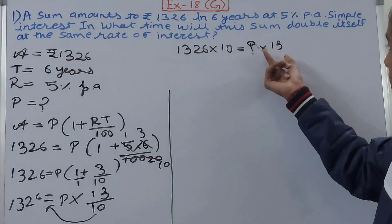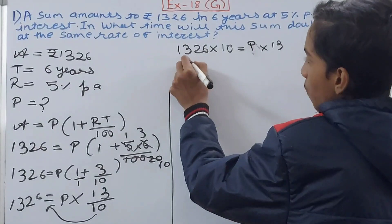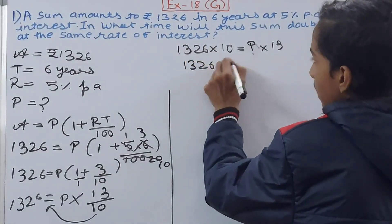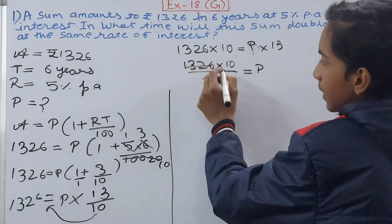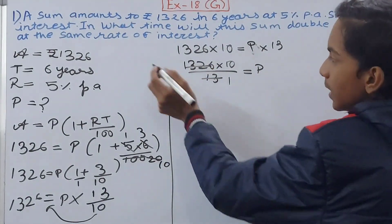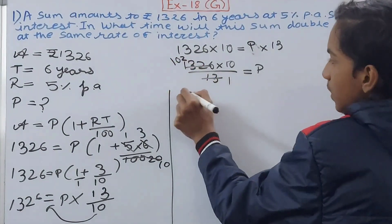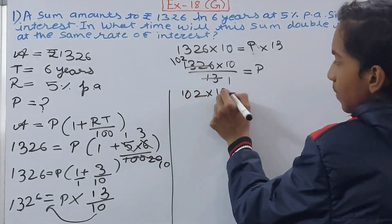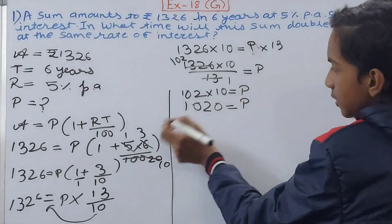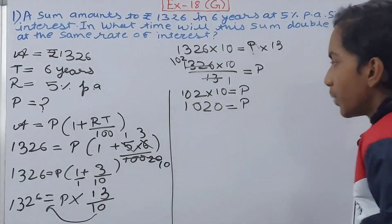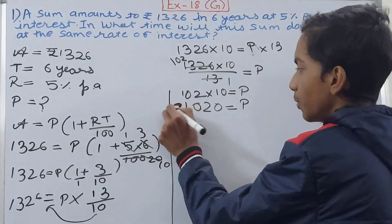Now 13 moves to the other side: P = 1326 × 10 / 13. Cancelling 1326 by 13 gives 102, so P = 102 × 10 = 1020. Our principal is rupees 1020.